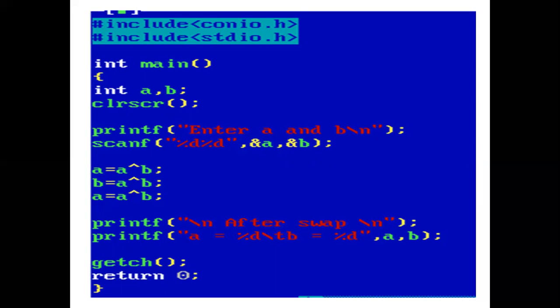Now, printf statement print after swap. Value of A is 3 and B is 2. And our program ends here.